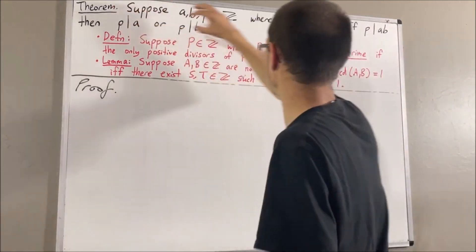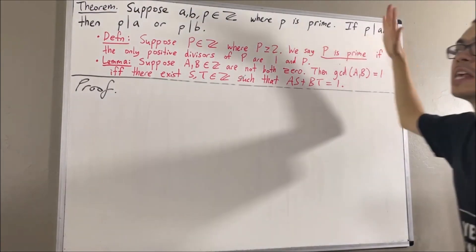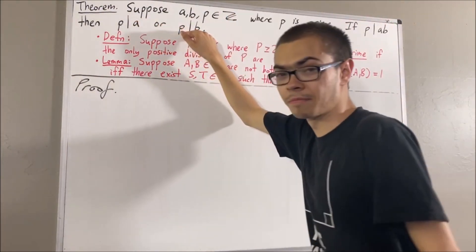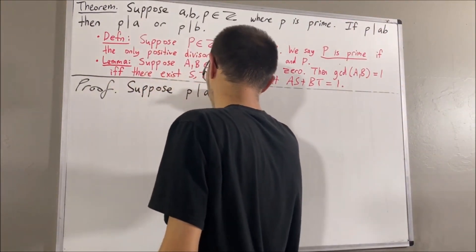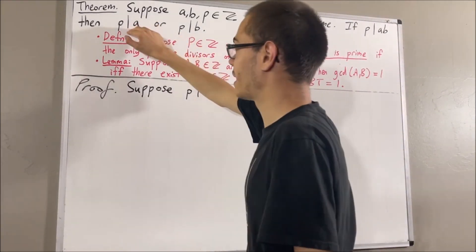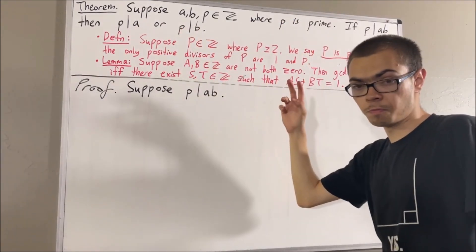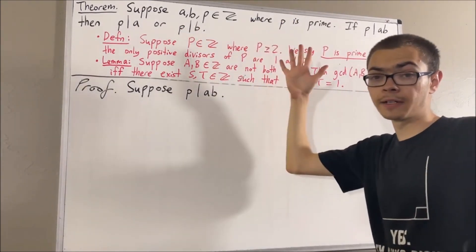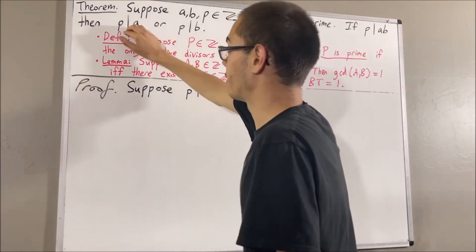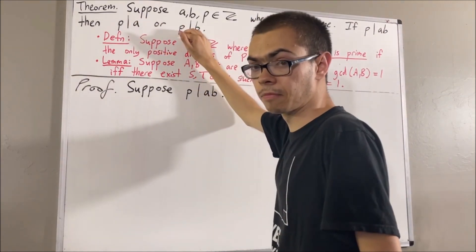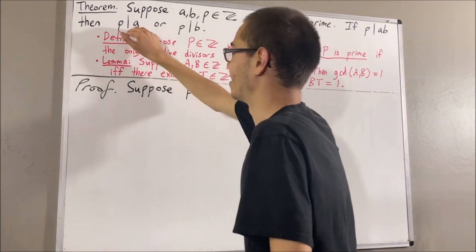Now let's get into proving this theorem. We're trying to prove: if p divides ab, then p divides a or p divides b. So let's suppose that p divides ab. From here, we want to prove that p divides a or p divides b. We know one of two things is true: either p divides a, or p doesn't divide a. In either case, we're going to show that p divides a or p divides b. In the case where p divides a, we immediately have that p divides a or p divides b, so there's nothing more to prove.